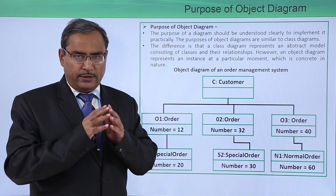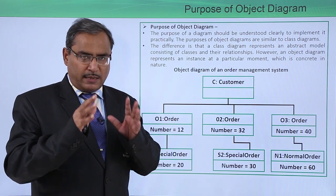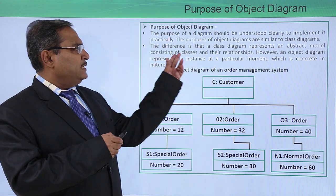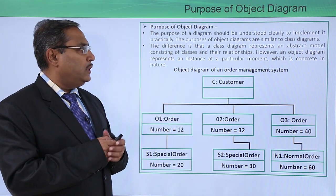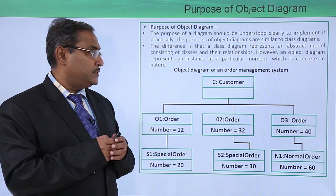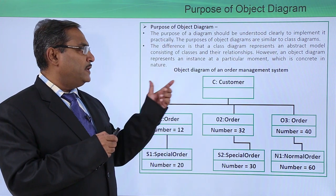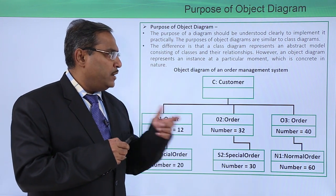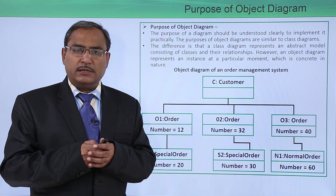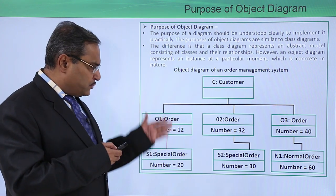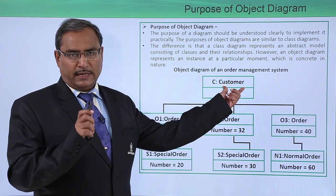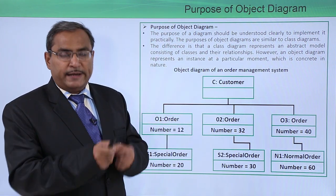A class diagram represents an abstract model consisting of classes and their respective relationships. However, an object diagram represents an instance at a particular moment which is created in nature during the application runtime. Here is one example - what is Customer? Customer is a class.